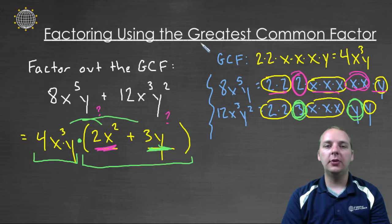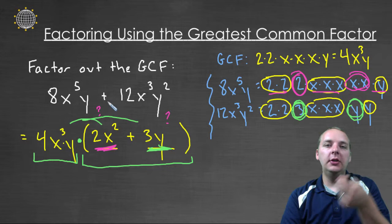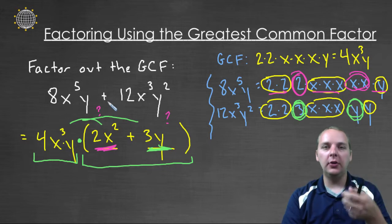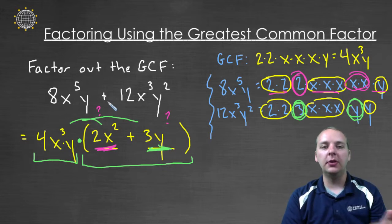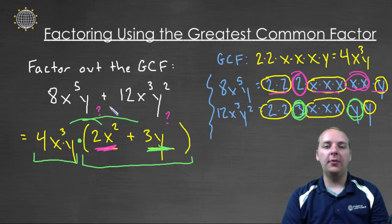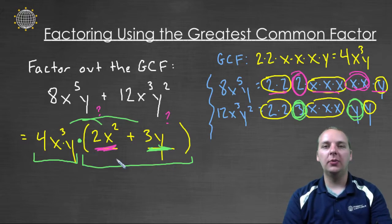So this is how we factor using the GCF. You find the GCF of the terms, then undistribute it — use the distributive property in reverse — to take that expression out of the polynomial. Then you write down what's left over, and you've created a product, which means you've factored the polynomial.